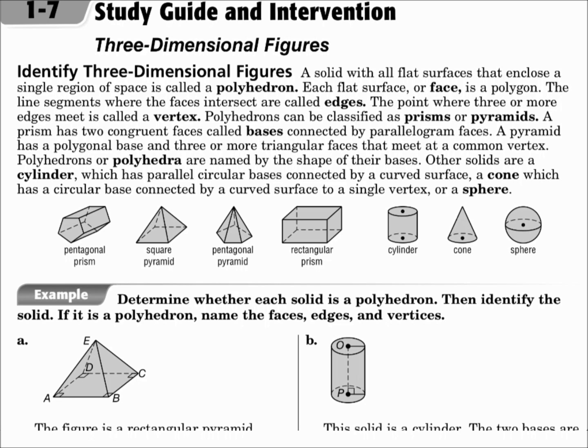A solid with all flat surfaces is called a polyhedron. The flat surfaces are called faces and they're polygons. The line segments where the faces intersect are edges. The corners where three or more edges meet is a vertex.